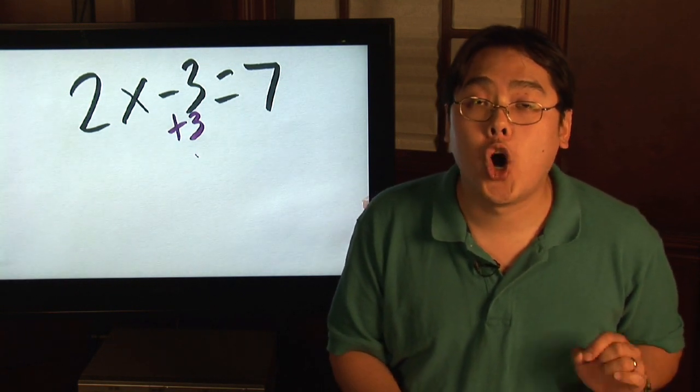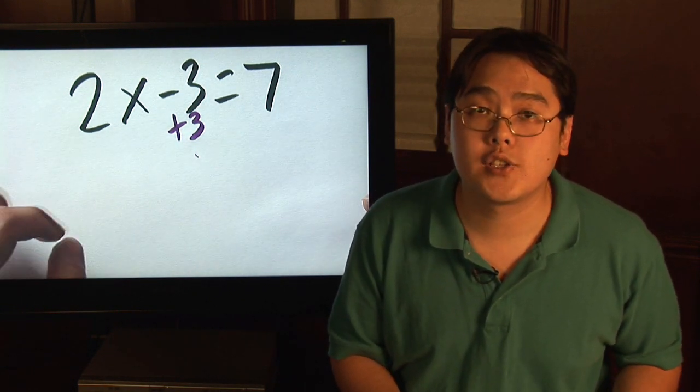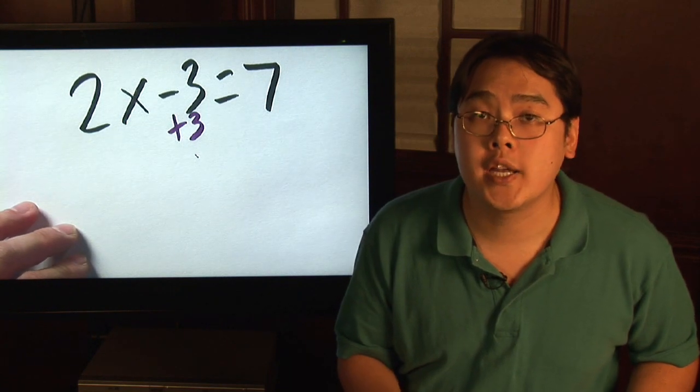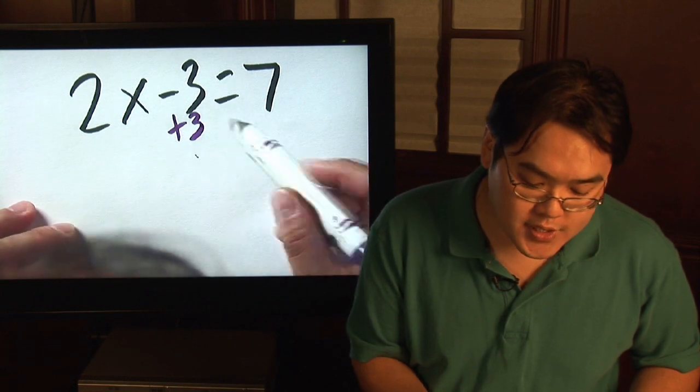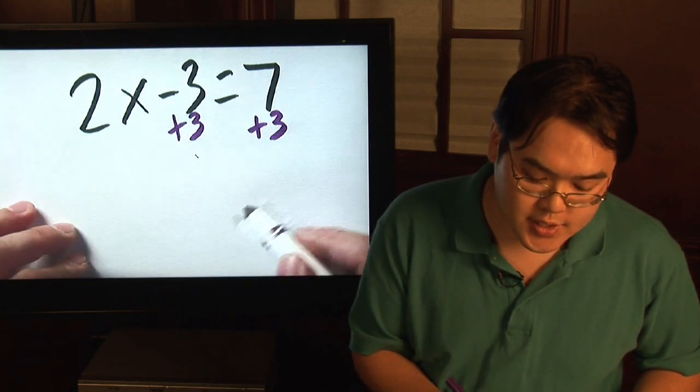But in an equation, you always want to preserve balance. So that means what you do to one side, you have to do the exact same thing to the other side. So that means if you add 3 to this side, you have to add 3 to this side as well.